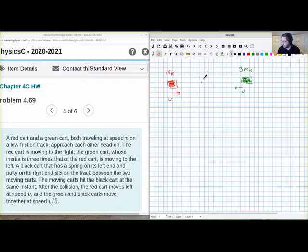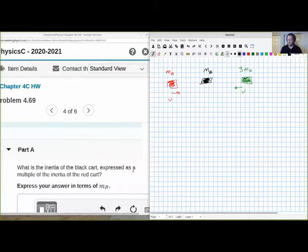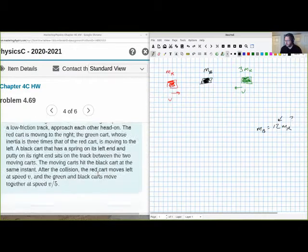And then the black one must be in the middle. So the red and green one aren't actually going to hit each other. They're going to hit the black one. And then we've got the black one is the one that we're trying to find the inertia of. That's the whole question. If you scroll down here, what's the inertia of the black cart expressed as a multiple of the inertia of the red cart? So that means when we're done, we're going to get an answer that's like m sub b equals 12 times m sub r or something like that. The exact number right there is the thing that we're looking for.